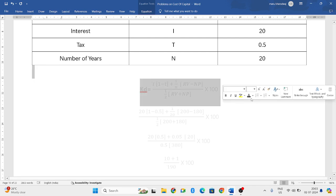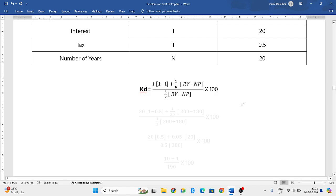Here there is a slight change in the formula. It is I, whole I in the bracket 1 minus T, 1 divided by N. Again in the bracket, RV minus NP, whole divided by half into RV plus NP into 100.